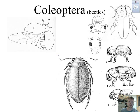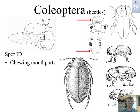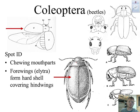Coleoptera — these are the beetles. This is the most diverse group. They all have chewing mouth parts. Their forewing — the forward wing towards the head — has a special name you need to know: elytra. This is a really tough shell used for protection.